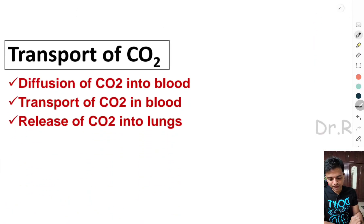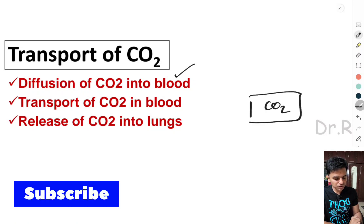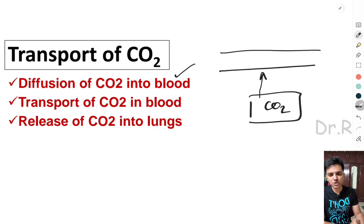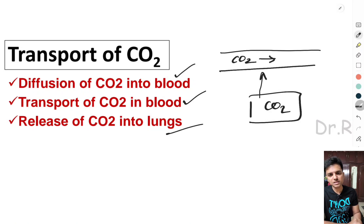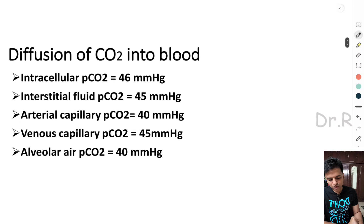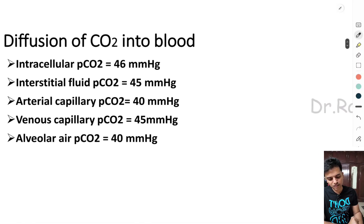Transportation of carbon dioxide occurs in three parts. The first portion is diffusion of carbon dioxide into the blood — carbon dioxide is produced in the cells or tissues, and from here it has to enter into the capillaries. Once inside, it has to be transported, and once transported to the level of the lungs, it has to be released. These three aspects are covered in this video.